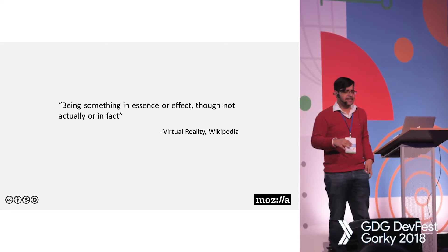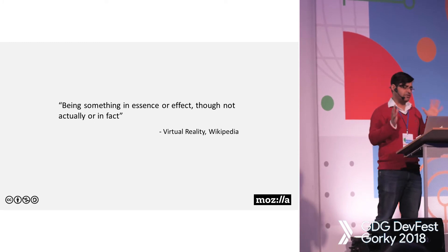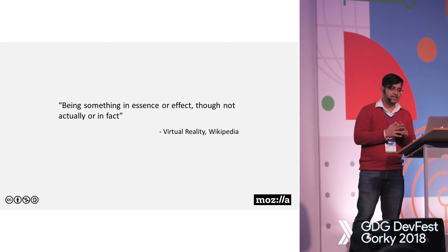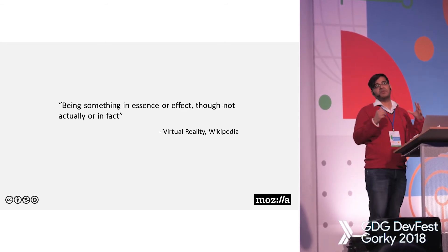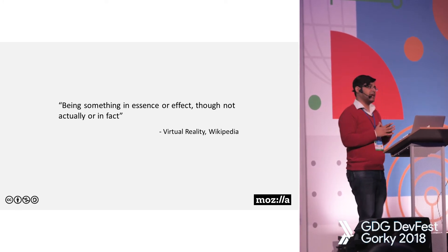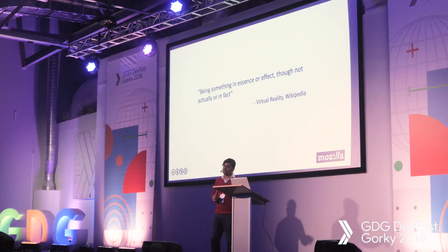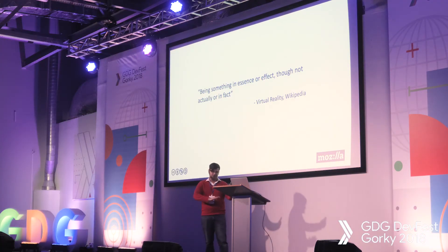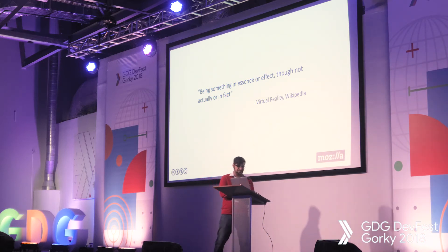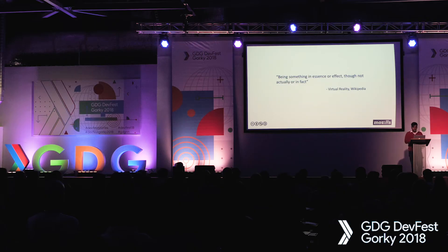I was quite happy having made that application — a working VR application with Pokemons in it. But then I thought about the term virtual reality — we're trying to simulate something that looks as real as possible. Then I came across Pokemon Go. It's basically an AR application where different Pokemons are tied to specific locations — you take your phone, look at your surroundings, and see 3D models in the real world. It took the real world and added a new layer of information on top of it.